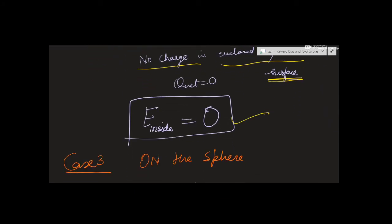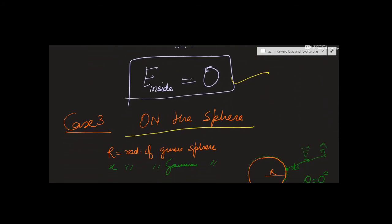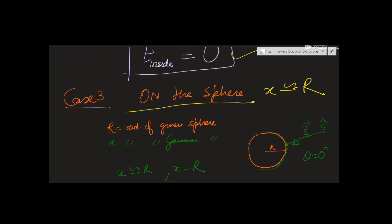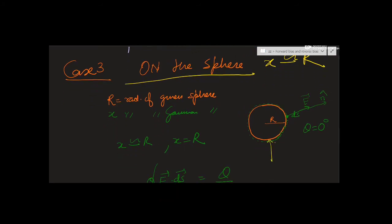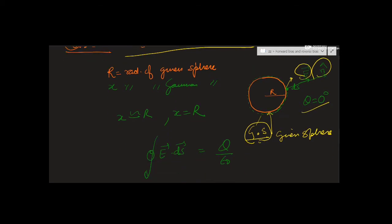The third case is when the point lies on the sphere, meaning x is approximately equal to R. The red circle is the given sphere and the green circle is the Gaussian sphere — they are very close, but the Gaussian surface is just slightly outside. Again we identify ds, the electric field, and the normal, with theta = 0.